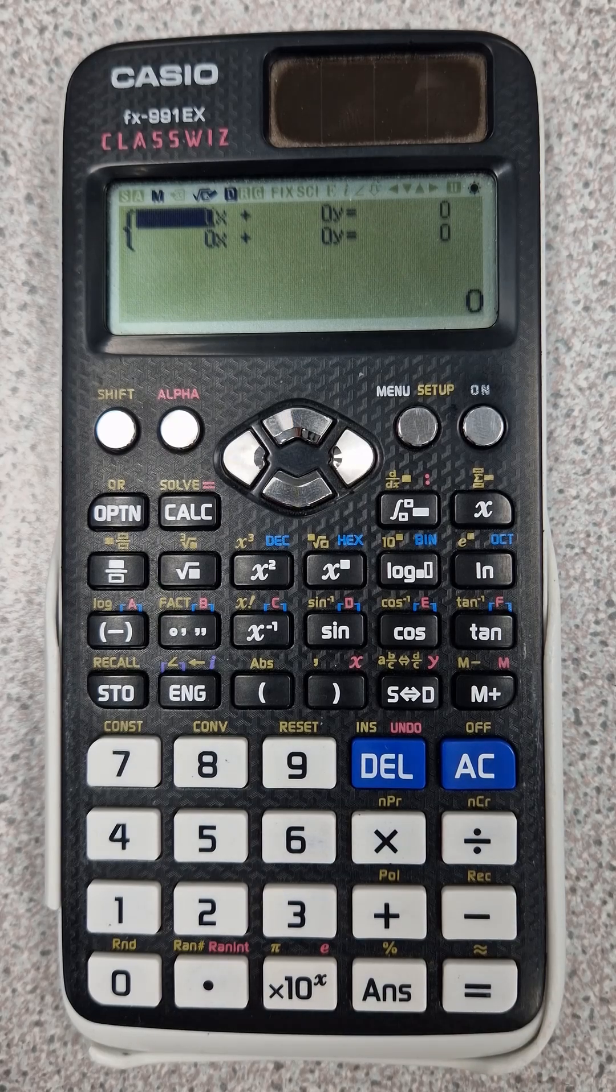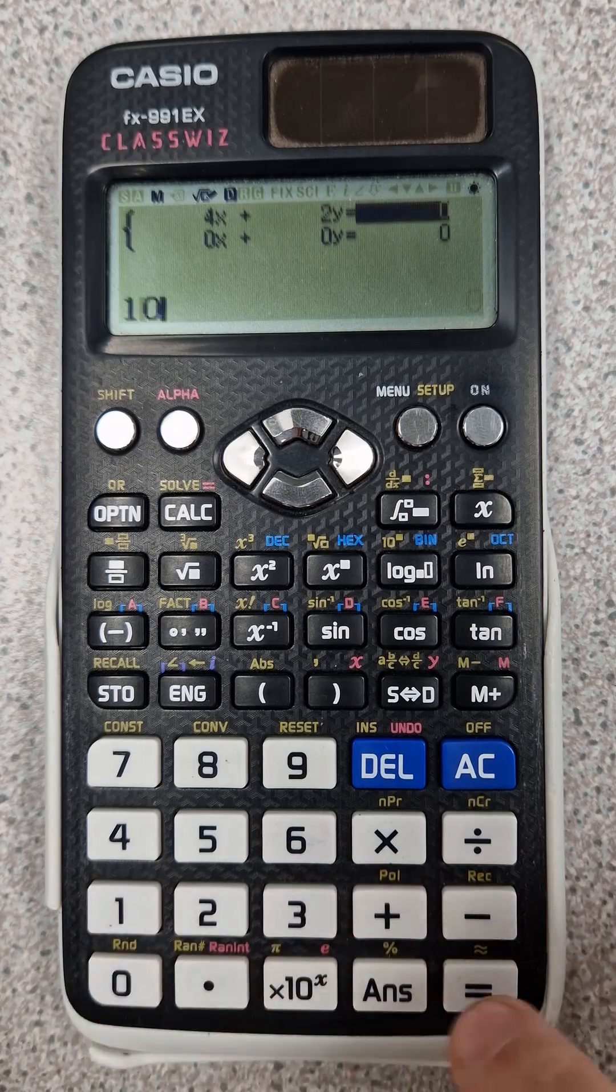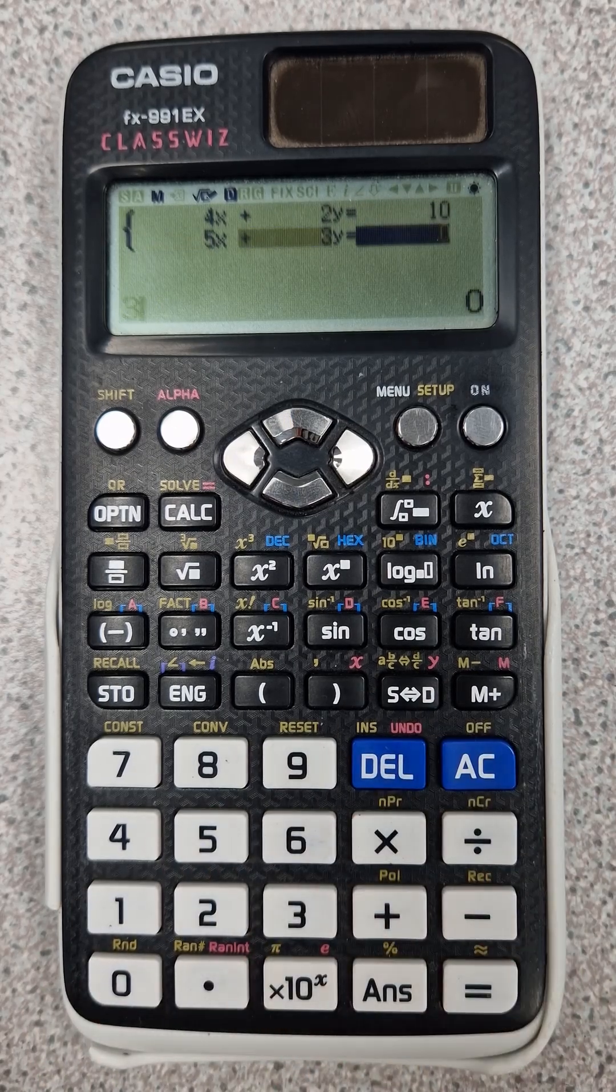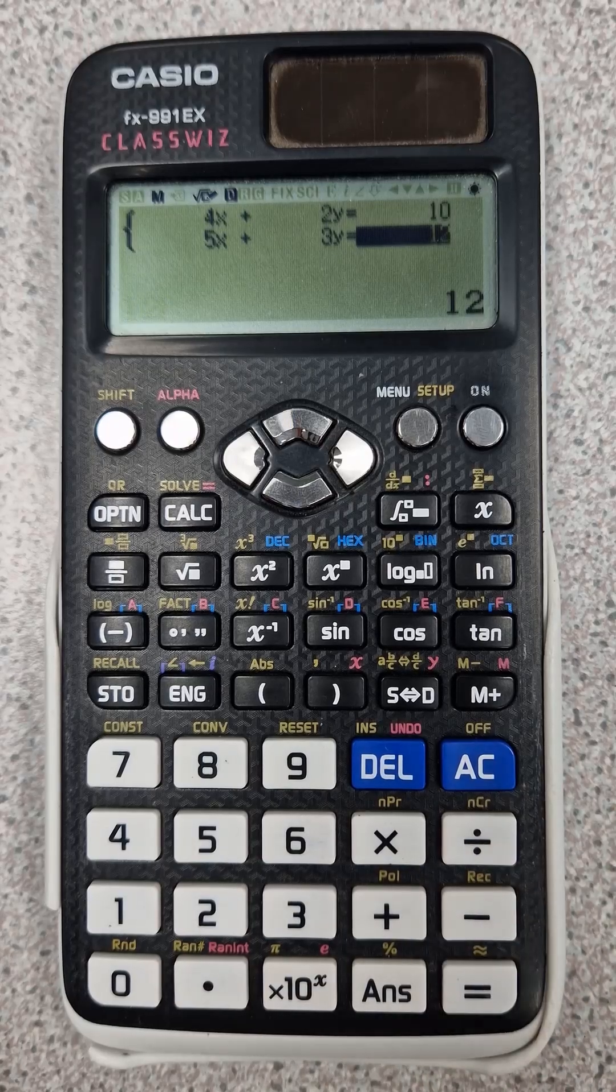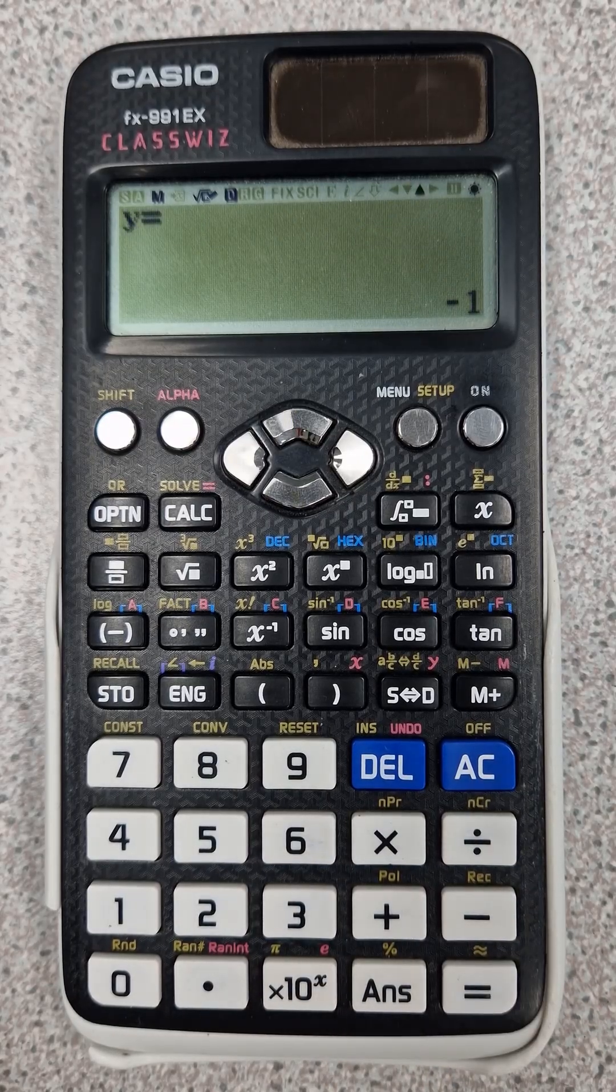And then we type in the equations again. So we've got 4x plus 2y equals 10. And then we have 5x plus 3y equals 12. And if we click execute, we have x equals 3 and y equals minus 1 as before.